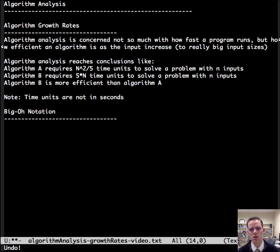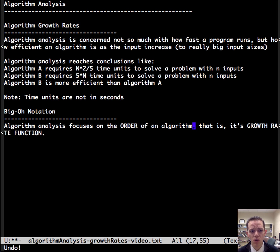So to do so, we need to know about big O notation. Algorithm analysis focuses on the order of an algorithm. That is to say the growth rate function. The order of an algorithm is order big O of that function, and hence the term big O here.